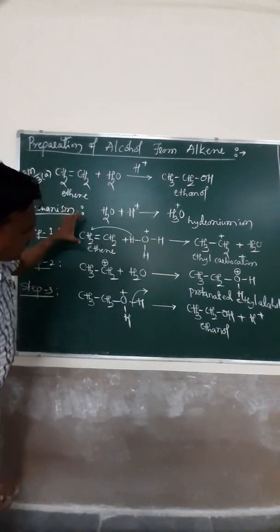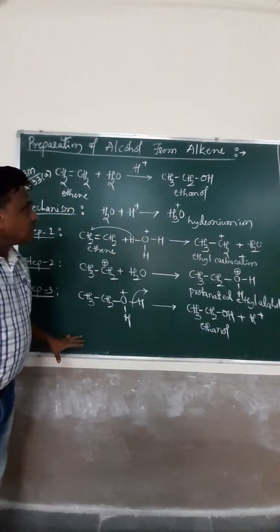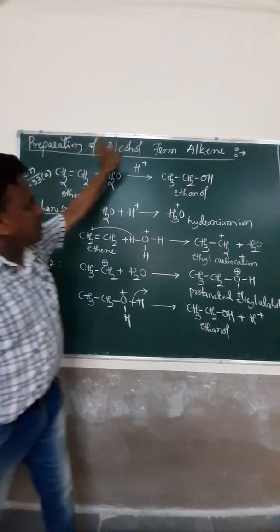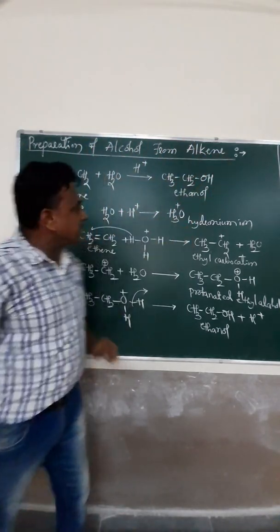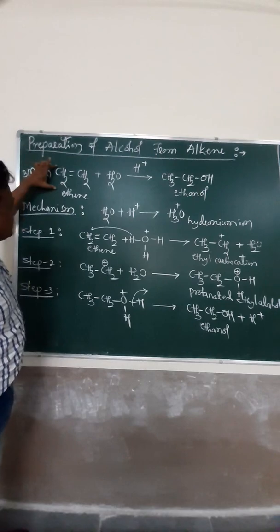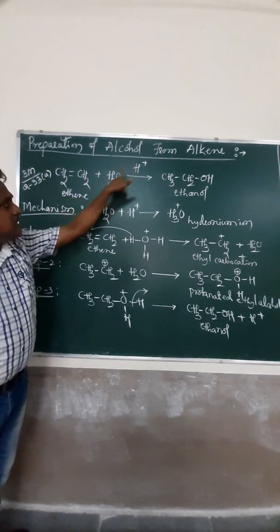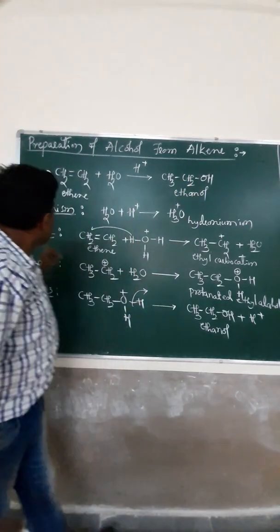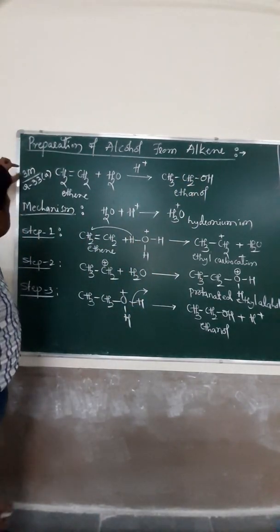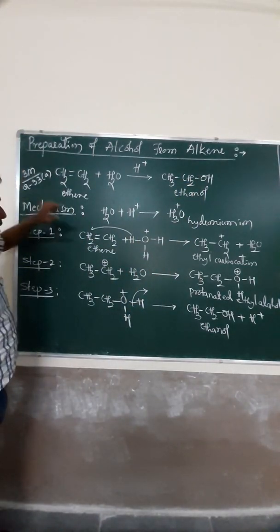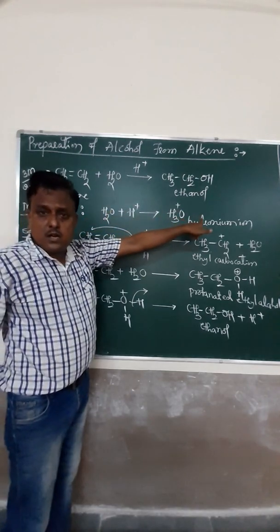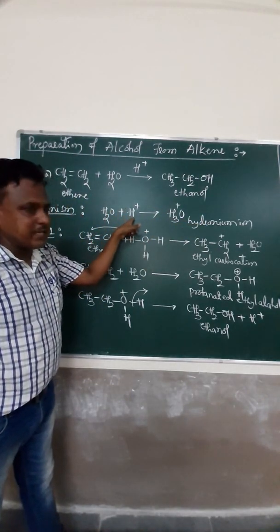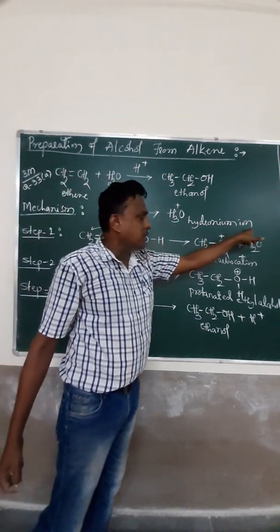This is a simple mechanism in the preparation of alcohol from alkene. I repeat once again. This is a common reaction. Ethene undergoes acid hydrolysis to form ethanol. And this mechanism is very important for remarks. First we have to generate the hydronium ion. Water is combined with acidified H plus the amount of hydronium ion.